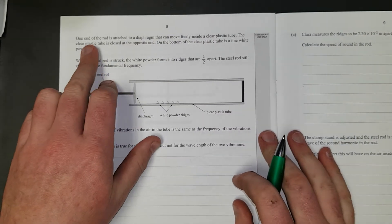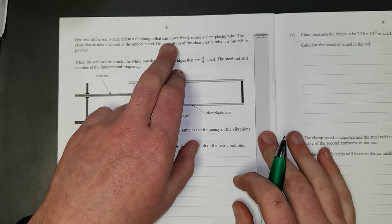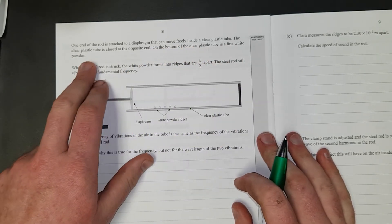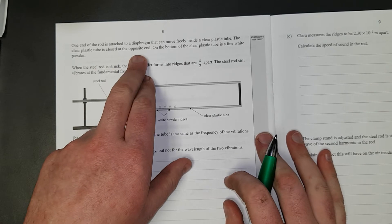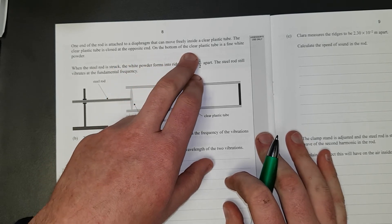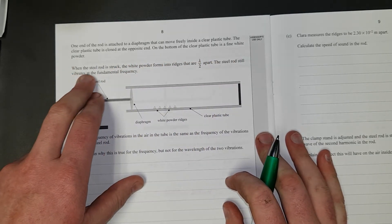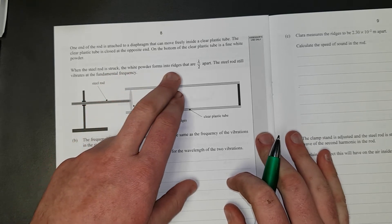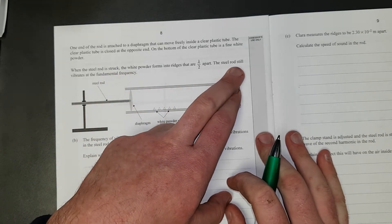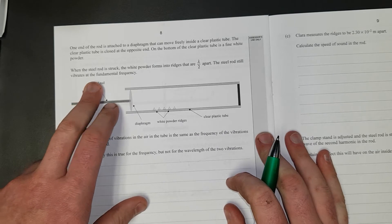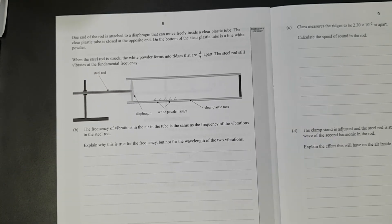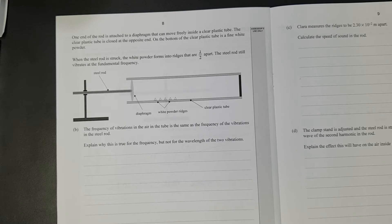Next question. One end of the rod is attached to a diaphragm that can move freely inside a clear plastic tube. The clear plastic tube is closed at the opposite end. On the bottom of the clear plastic tube is a fine white powder. When the steel rod is struck, the white powder forms ridges that are half a wavelength apart. The steel rod still vibrates at the fundamental frequency. The frequency of the vibrations in the air and the tube is the same as the frequency of the vibrations in the steel rod. Explain why this is true for the frequency, but not for the wavelength. So pause it, write the answer, and then discuss.